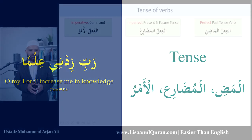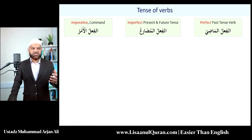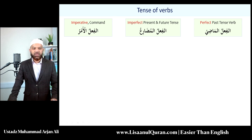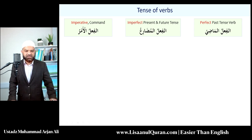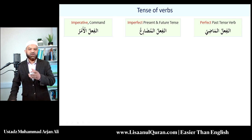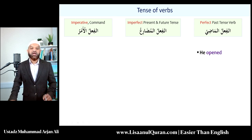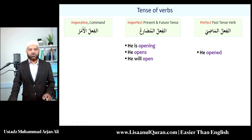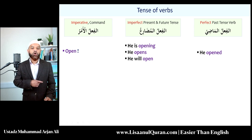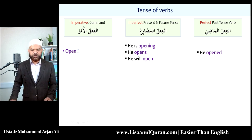The tense of the Arabic verb. In Arabic, essentially we have three categories: al-fi'l al-madi — the perfect or past tense; al-fi'l al-mudari' — the imperfect tense, covering present habitual, present continuous, and future; and al-fi'l al-amr — the imperative or command. In English: 'he opened' is past tense; 'he is opening / he opens / he will open' is imperfect; and 'open' is the imperative.